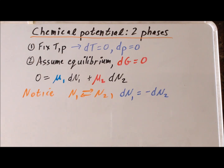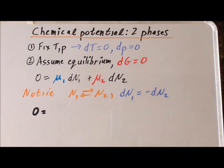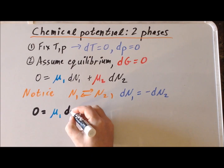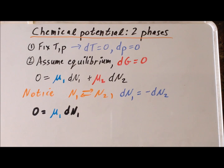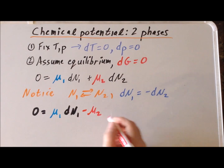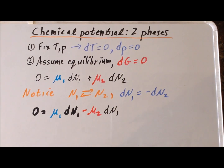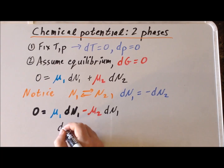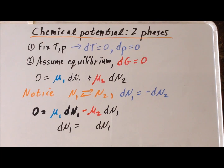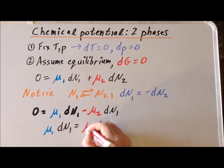Now that we've established that, we can rewrite our expression in terms simply of dn1. We have μ1·dn1 minus μ2·dn1 equals zero, which allows us to write the equality that the chemical potential of one times dn1 is equal to the chemical potential of two times dn1.